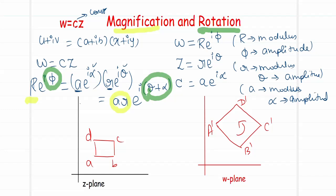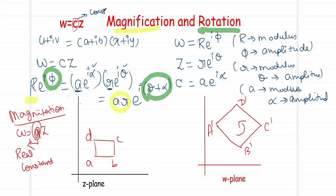If instead of c being a complex constant, we have w = az where a is a real constant, then only magnification takes place and there is no rotation of the image, because the rotational angle φ is entirely absent for real numbers. So w = az with a real constant causes magnification alone, but with a complex constant it magnifies and also rotates the data.